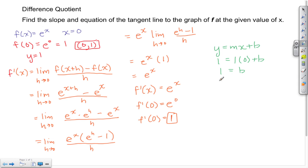So here I have 1 is equal to b, and now I can write the equation for the tangent line. That equation is going to be y is equal to, in this case m is 1 so I don't need to write it, I can write x plus b, where I found b to be 1. So the equation of the tangent line is y equals x plus 1.